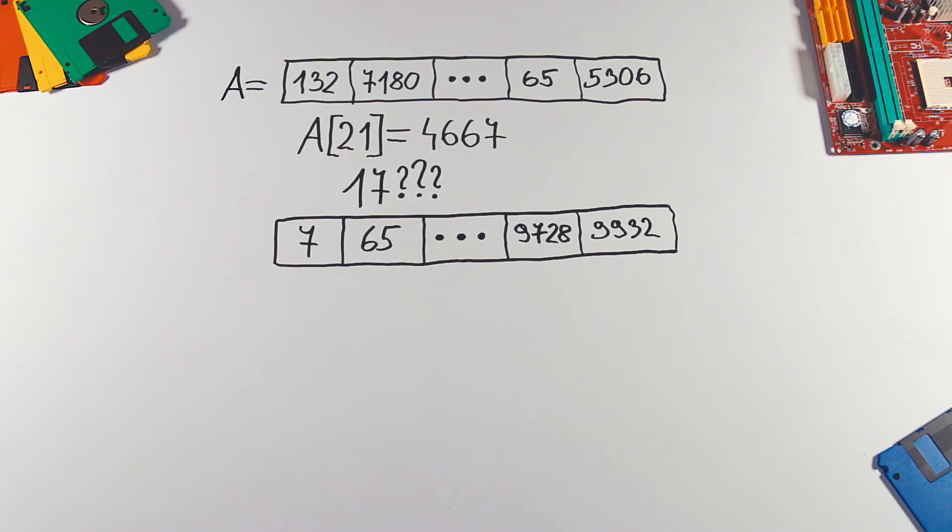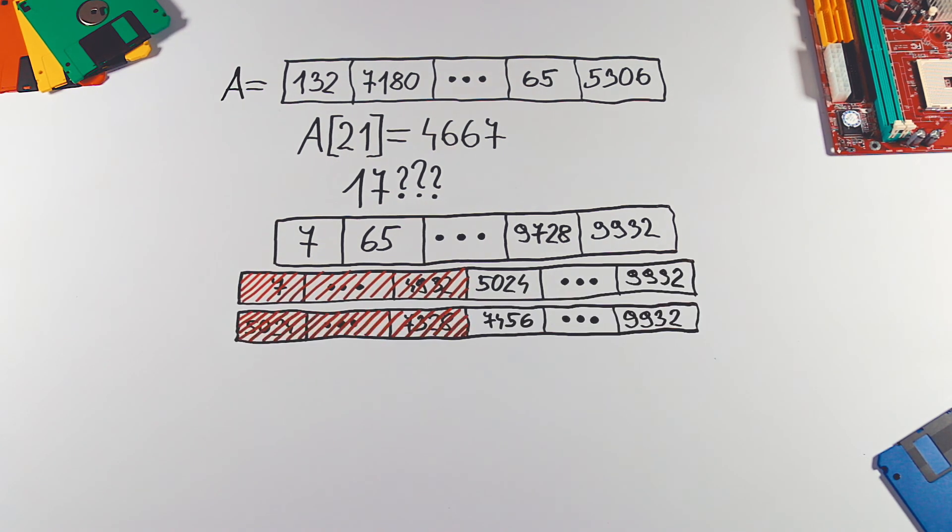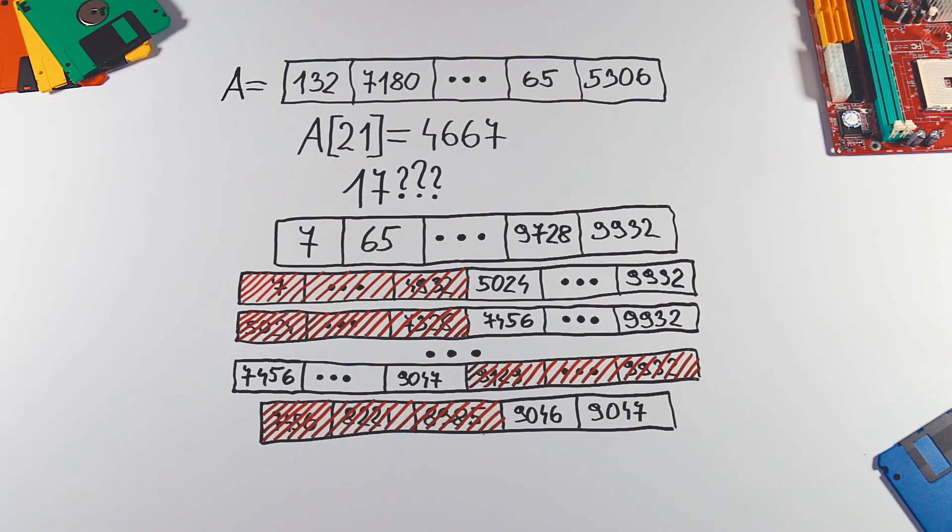Since our array is now sorted, we can do binary search. Let's find number 9046. Binary search is cutting data in half each iteration, which gives us logarithmic complexity.